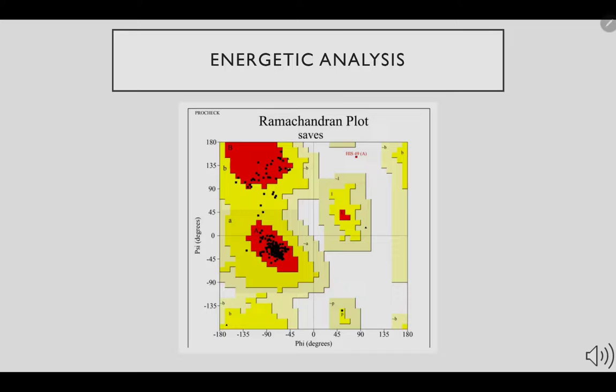This is the Ramachandran plot of the protein model shown earlier. The black dots represent the phi and psi angle pairs in our digital protein model. This plot shows that our model is strictly favorable because all but one phi and psi angle pairs fall within the allowed region. The disallowed pair may shift when placed in a different solvent.